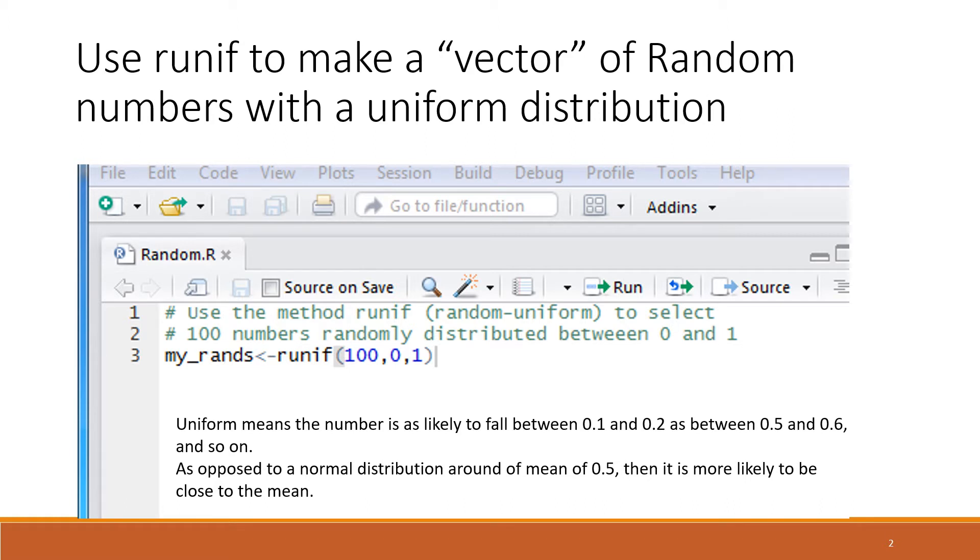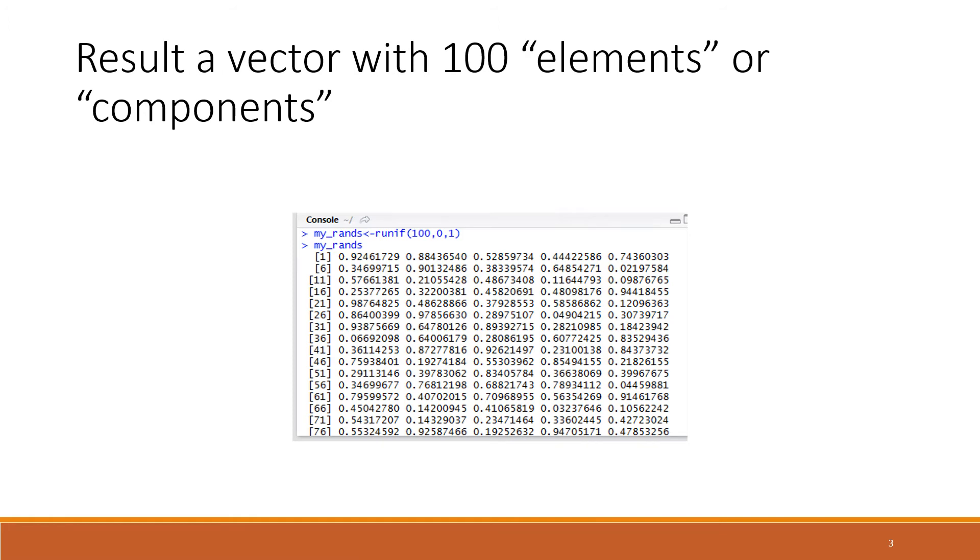They're going to be uniformly distributed between 0 and 1. Here we see the result down in the console. My_rands was repeated so the values would be echoed out in the console, and we see that we have a vector or array with 100 elements.